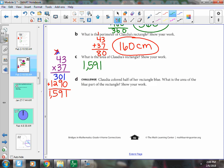1,591. When I say area, you say square-ia. Area, square-ia, area, square-ia. So it's square centimeters.